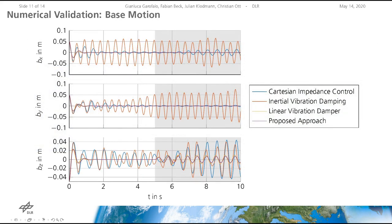The gain tuning for the inertial vibration damping control strategy was very challenging, due to the fact that the base and the manipulator oscillate in the same frequency bandwidth. Therefore, the separation of the two-timescale control does not hold and the vibration damping action may even cause instability. When the end effector stiffness was chosen differently, the results of the inertial vibration damping method were acceptable and the gain tuning was straightforward. Another difficulty is that the gain tuning is configuration dependent. The base motion in all three spatial directions is plotted over time.